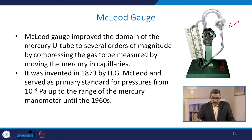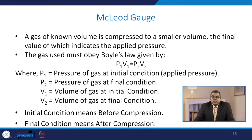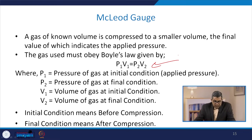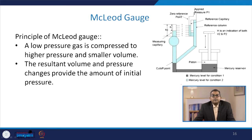The Macleod gauge improved the domain of the mercury U-tube manometer by several orders of magnitude by compressing the gas to be measured by moving mercury in capillaries. Invented in 1873 by H.G. Macleod, it served as a primary standard for pressure from 10⁻⁴ Pascal up to the range of mercury manometers until the 1960s. A gas of known volume is compressed to a small volume, the final value of which indicates the applied pressure; the gas must obey Boyle's law: P₁V₁ = P₂V₂.